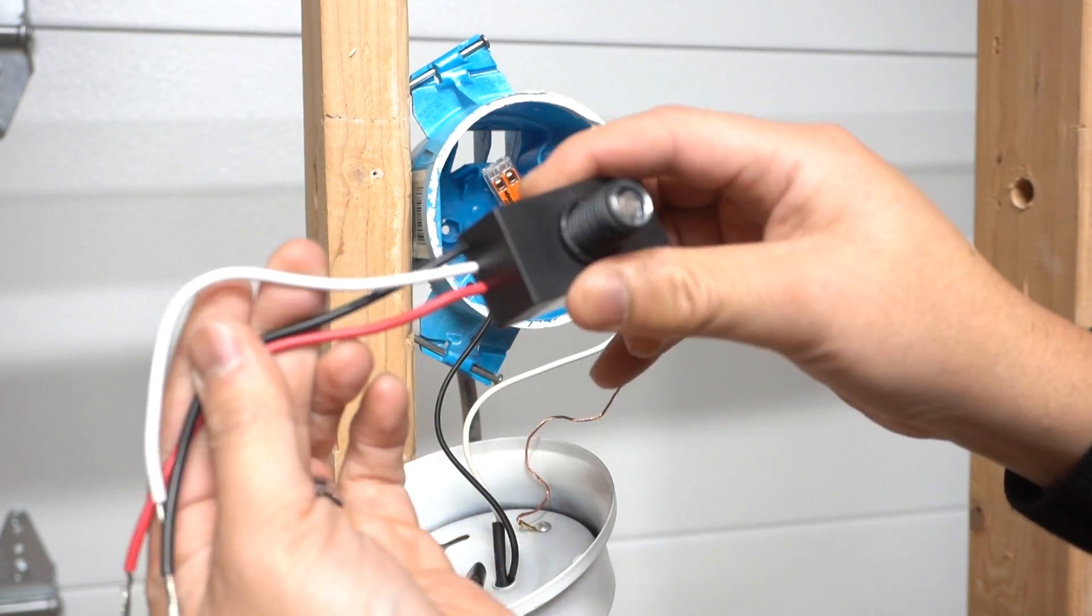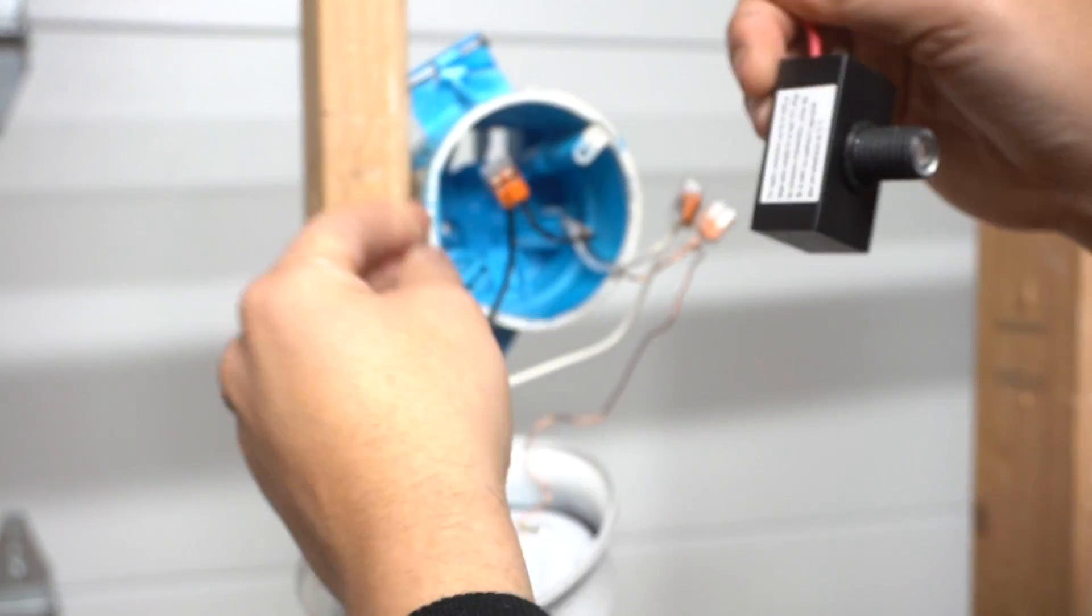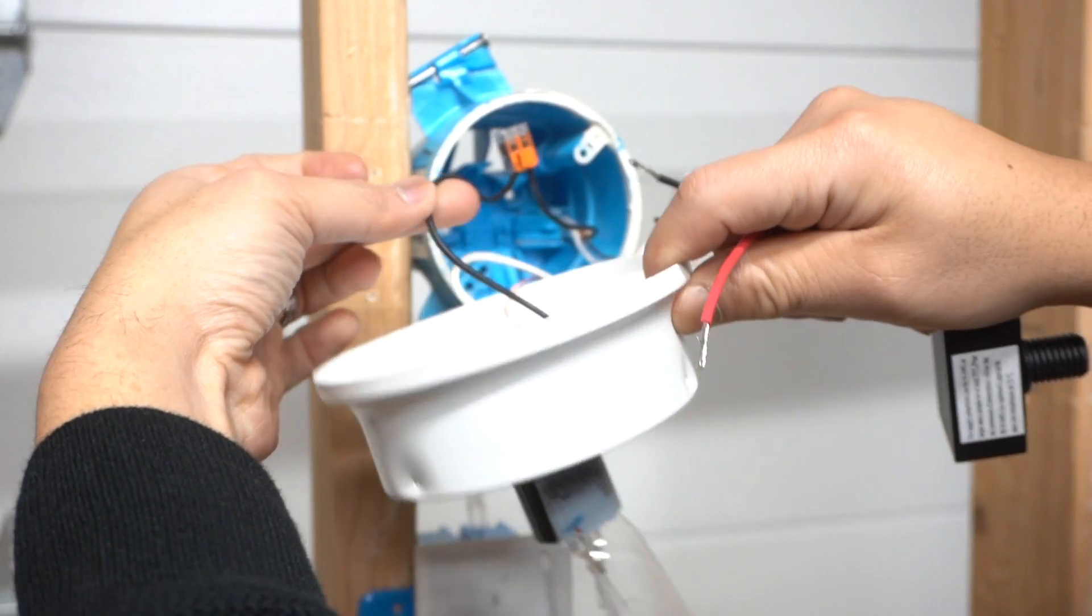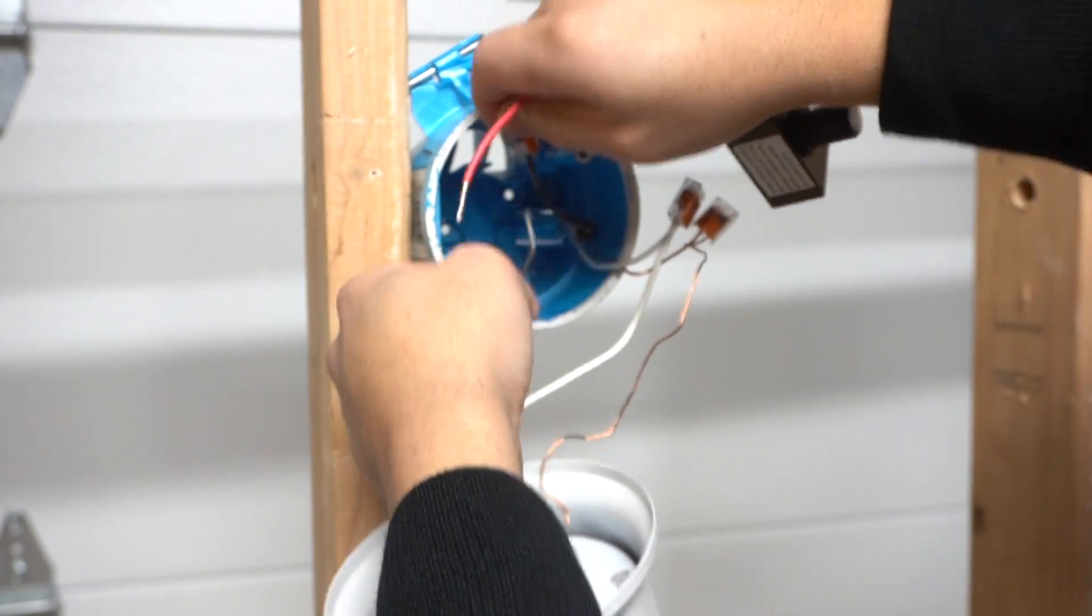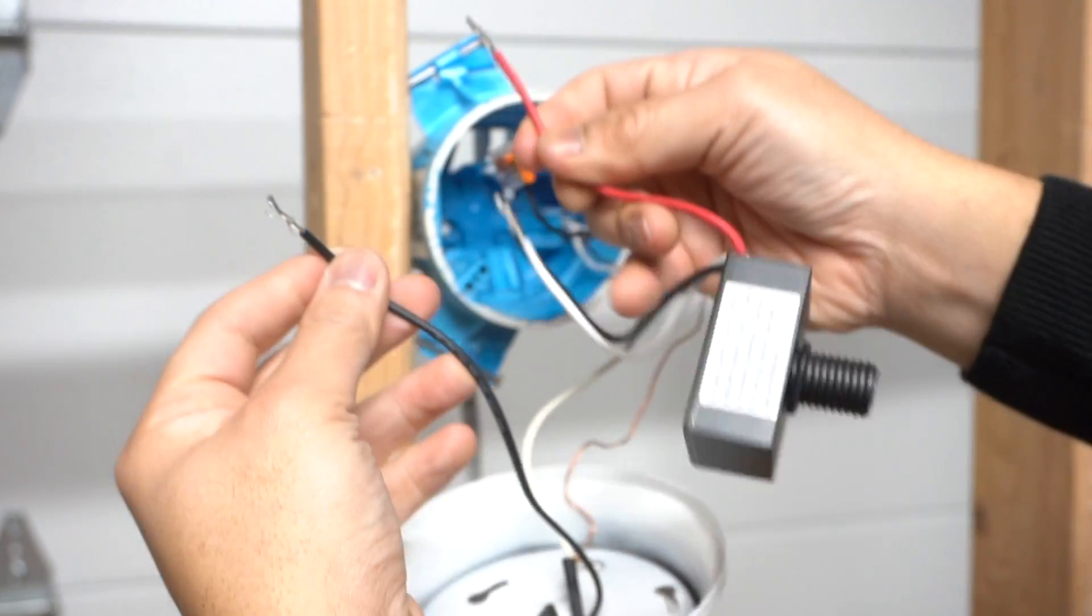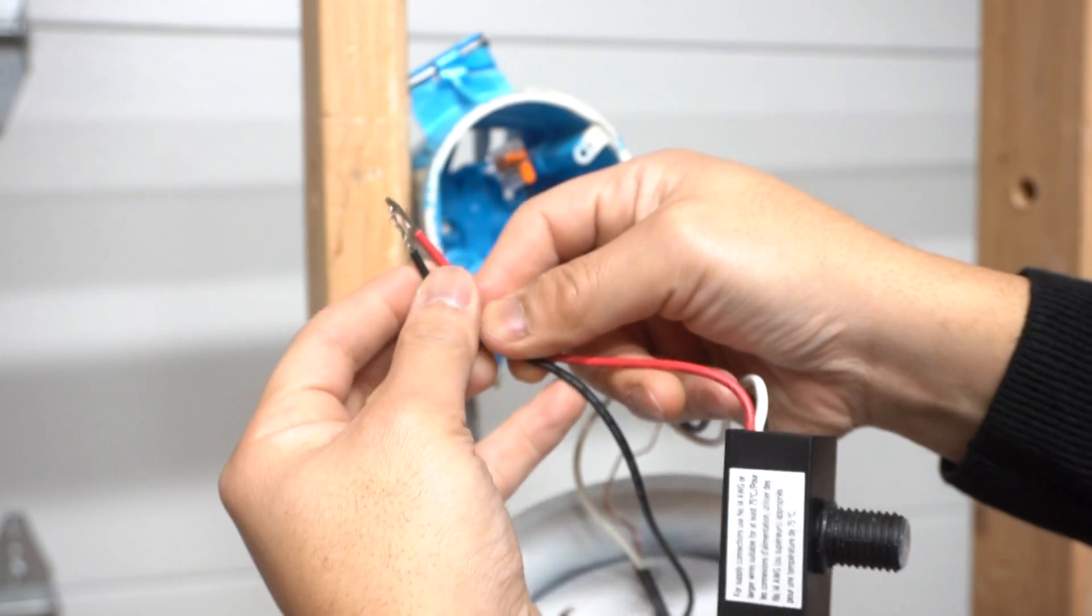Now let's take our photo sensor and we're going to take the red wire first. We're going to disconnect the hot, the black wire from the light fixture like so. And then we're going to connect the red onto the black hot wire from the light fixture.